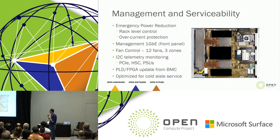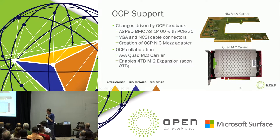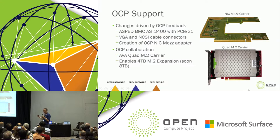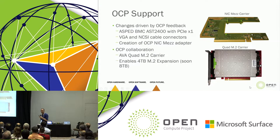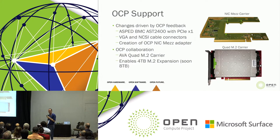We are optimized for cold aisle service — we don't want to be in the hot aisle. On OCP support: we have a NIC mez carrier, a PCIe board that plugs into our PCIe slots and enables the standard OCP NIC mezzanine — this is what gets an OCP customer NCSI sideband Ethernet for their management. We also collaborated with partners at Facebook to create an M.2 carrier board called AVA — quad M.2s enabling four to eight terabytes of expansion in a PCIe slot.